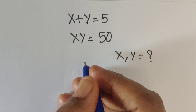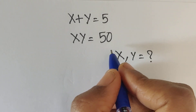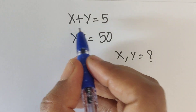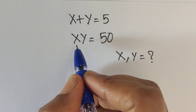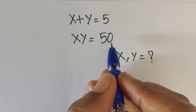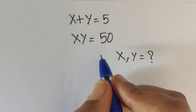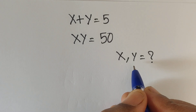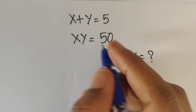Hello everyone, welcome back to our channel. Here we have one question: x plus y equals 5, and x times y equals 50. In this problem we have to find the values of x and y.